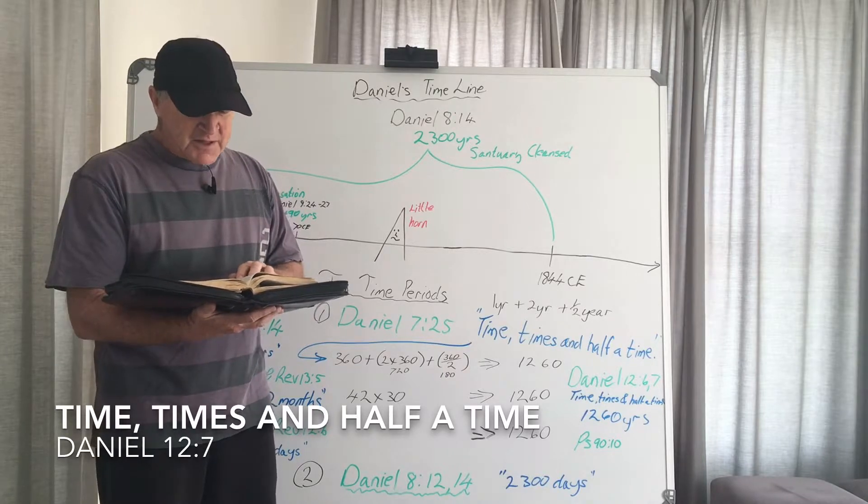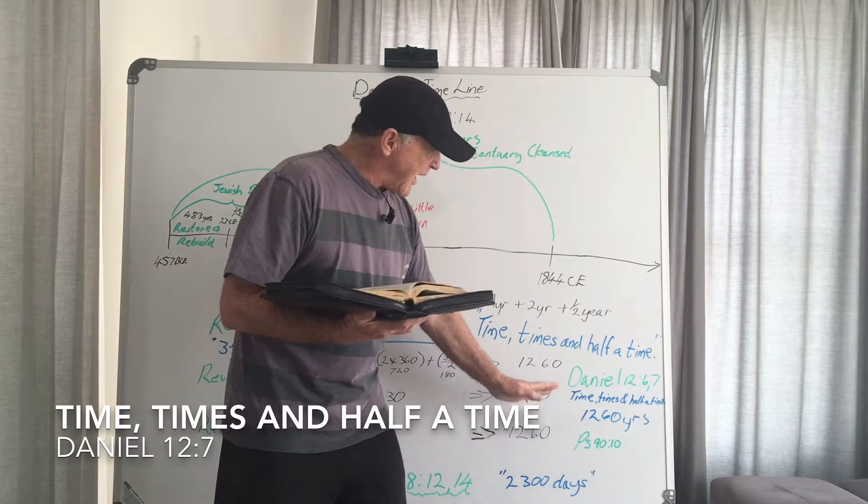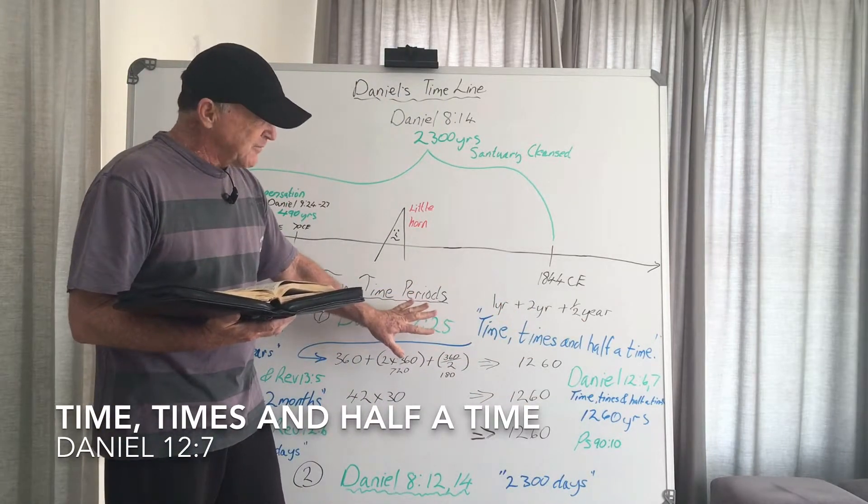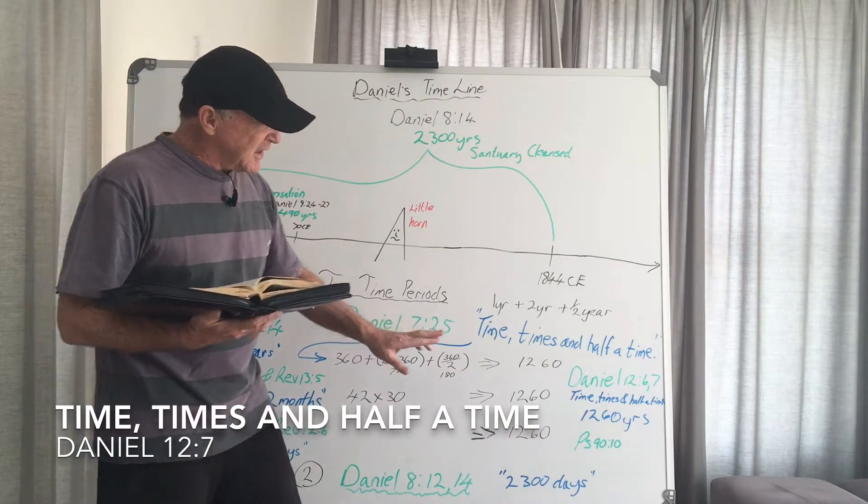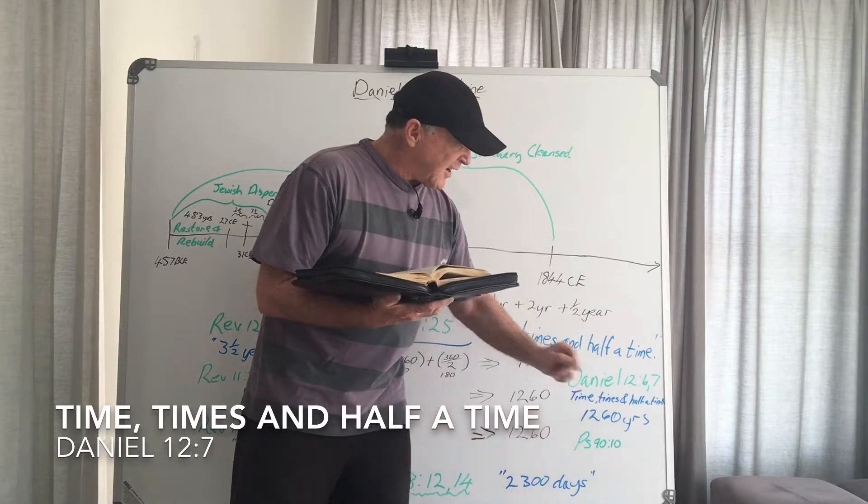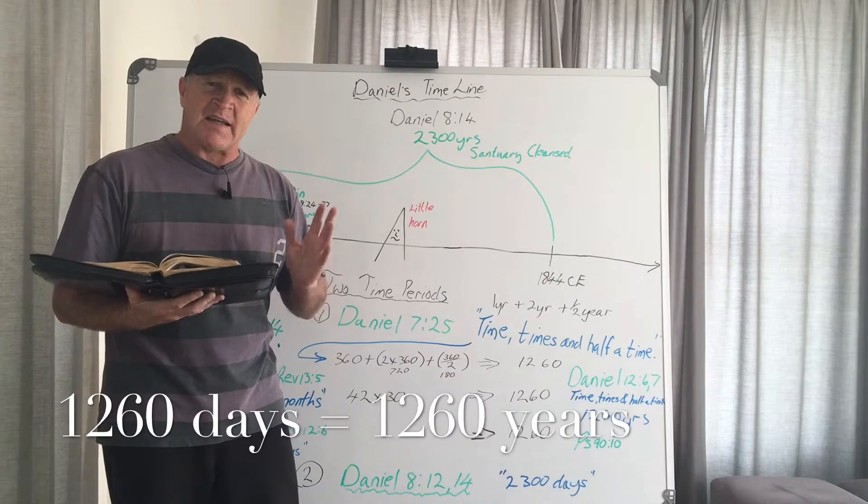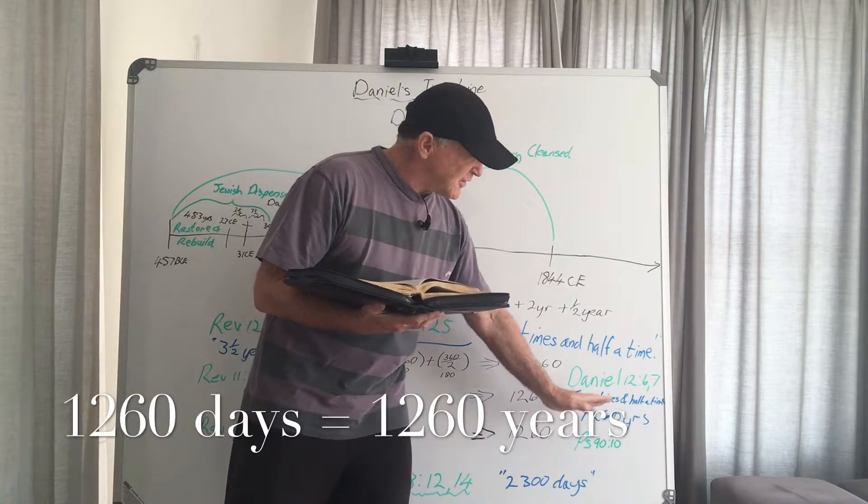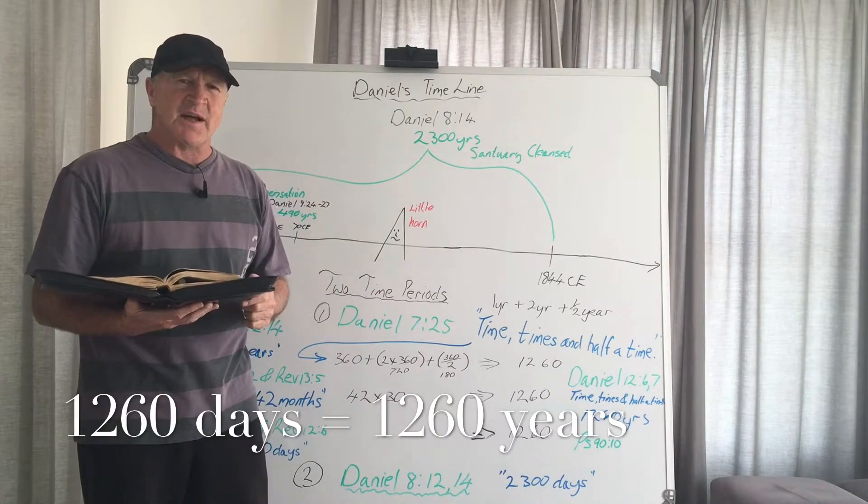And he says there, it will be for a time, times and a half a time. So immediately we are drawn back again to this period of time that this little horn rules. That all of what it's going to do will be done in the period of the 1,260 days, which as we've discovered in prophecy, a day is equal to one year. So for 1,260 years, this little horn is going to exercise its power.